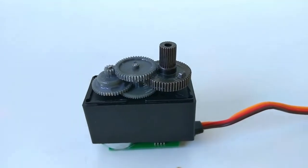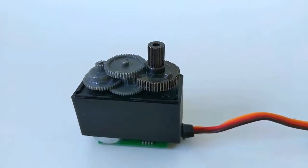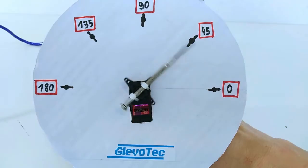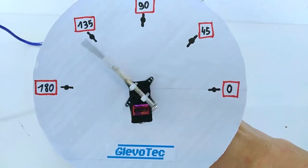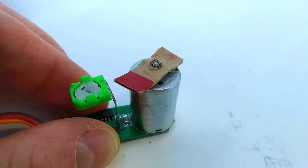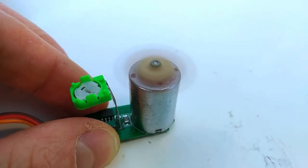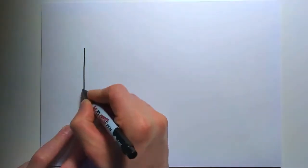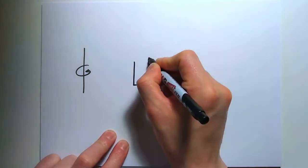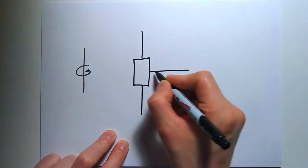So how does it know when it reaches the desired position? What happens when you send the PWM position signal to the servo motor is this. The DC motor will start spinning and normally move the output shaft. Meanwhile, the potentiometer is set up as a voltage divider.